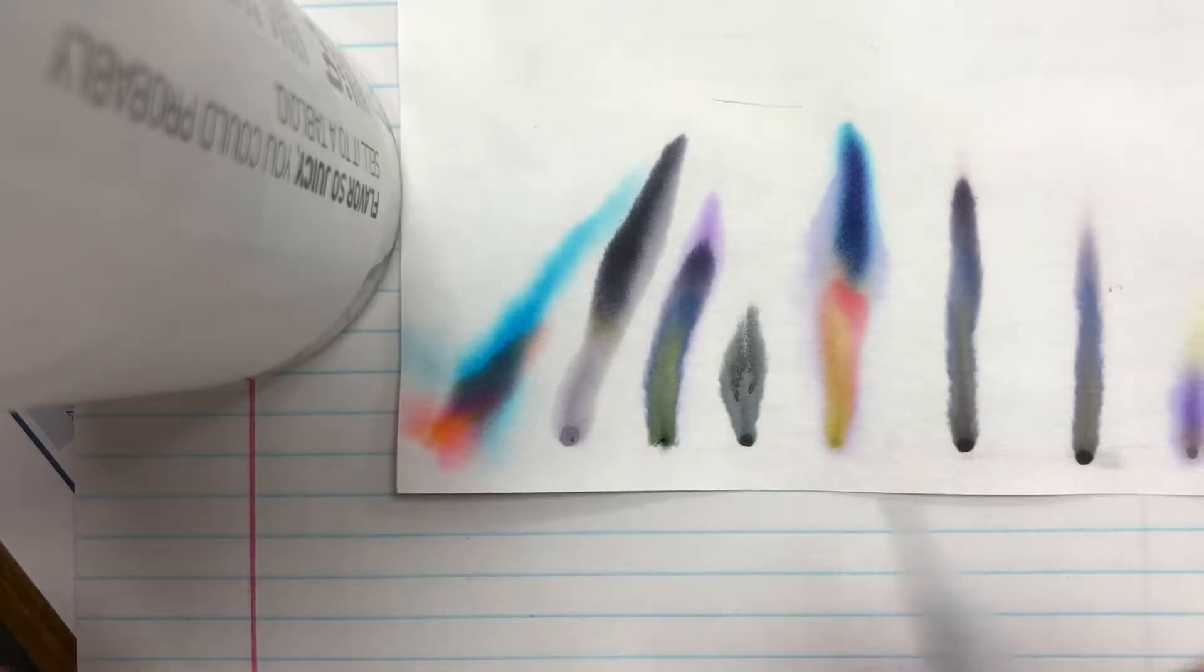So today you guys had an opportunity to take all the different color black inks and use the control that you created to figure out which pen the ransom note was written with. Then you had to take a couple samples home from your control, and I asked you to calculate something called an RF value.